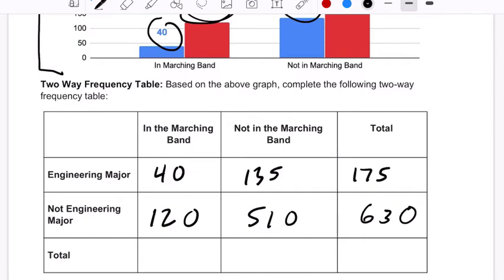Now we add up our columns. We have got 160 people in marching band, 645 not in marching band. And then these two numbers are totaled to the same as these two numbers, which they will. And we get 805.